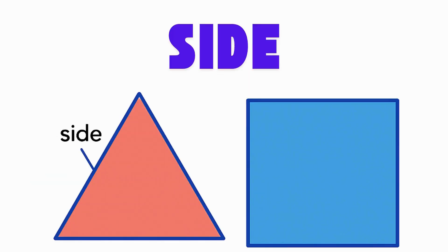A side is a straight line on the outside of a flat shape. It makes part of a shape. A triangle has three sides. A square has four. Say, side. Use your finger to draw a side in the air.